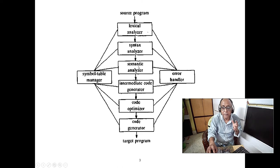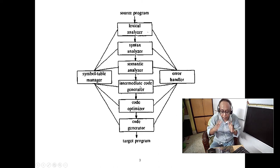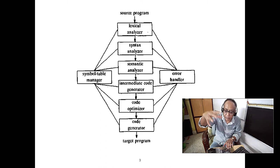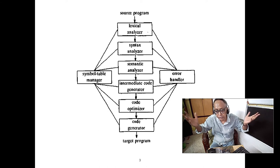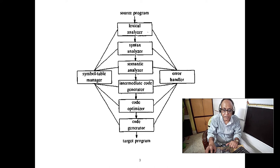After the semantic analyzer, we have the intermediate code generator. Why an intermediate code generator? Because you write code here but you are not sure your code will run on this machine or a remote machine. So first, intermediate code is generated that is independent of the target machine.